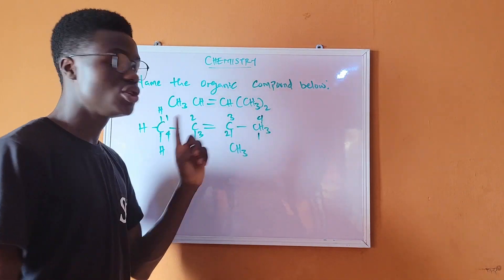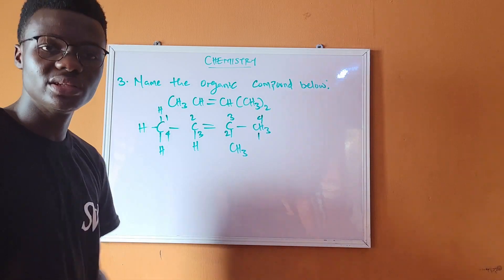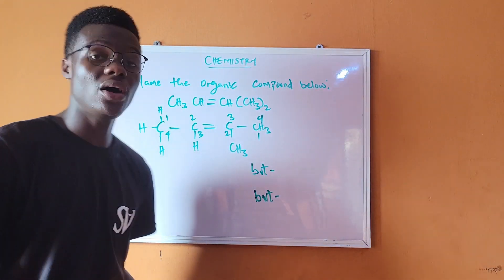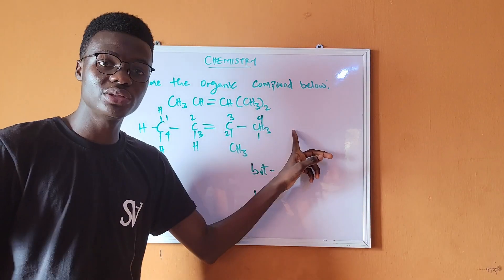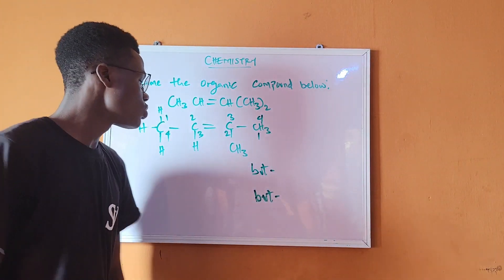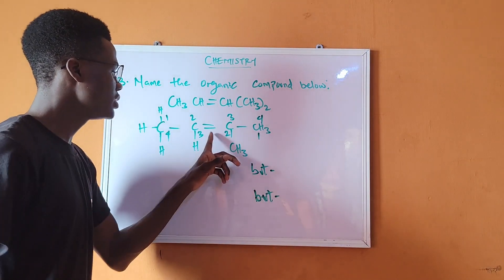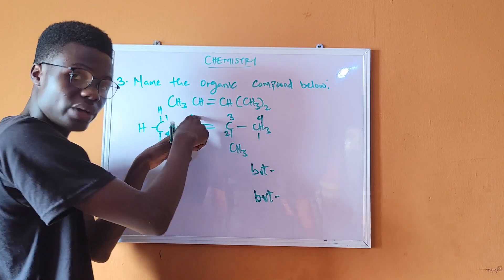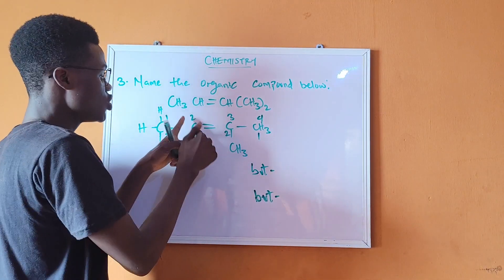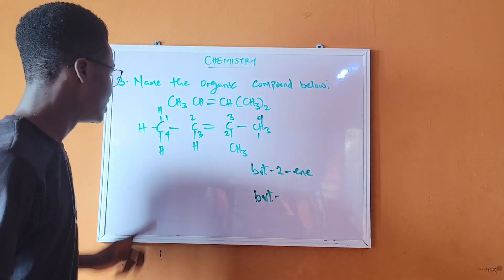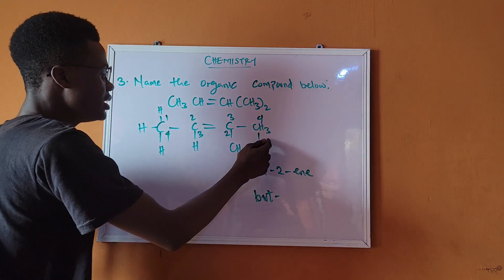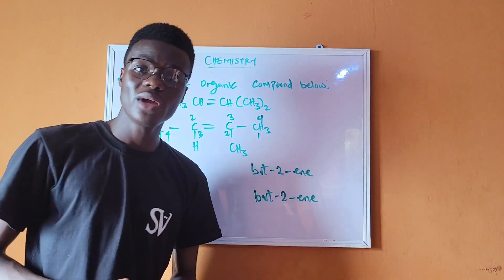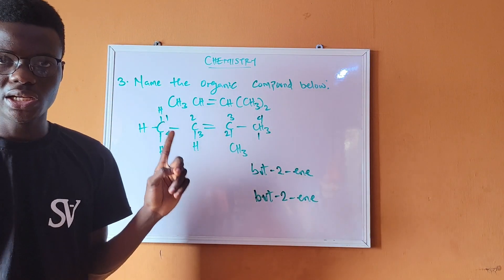We have a four-carbon chain, so the parent is 'but'. There is a double bond between two carbons. Using the first numbering, the double bond is on carbon 2, giving 'but-2-ene'. Using the second numbering, the double bond is still on carbon 2, also giving 'but-2-ene'.